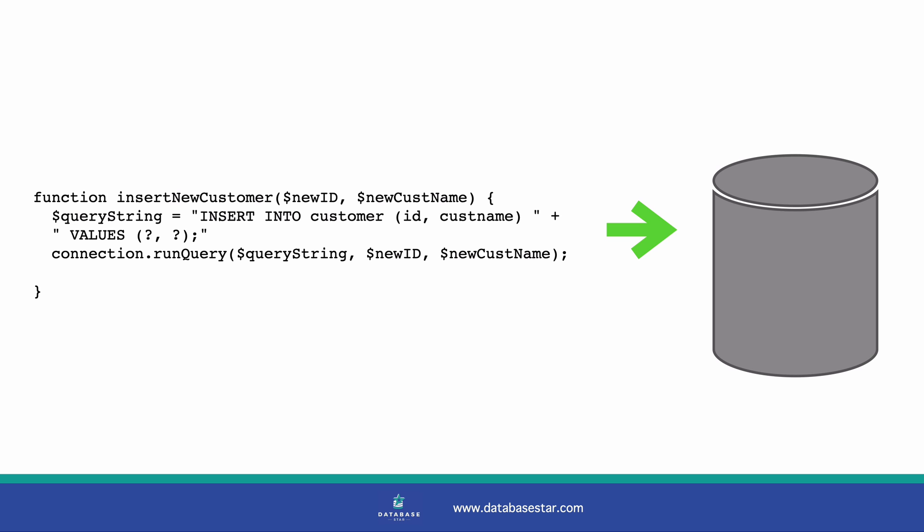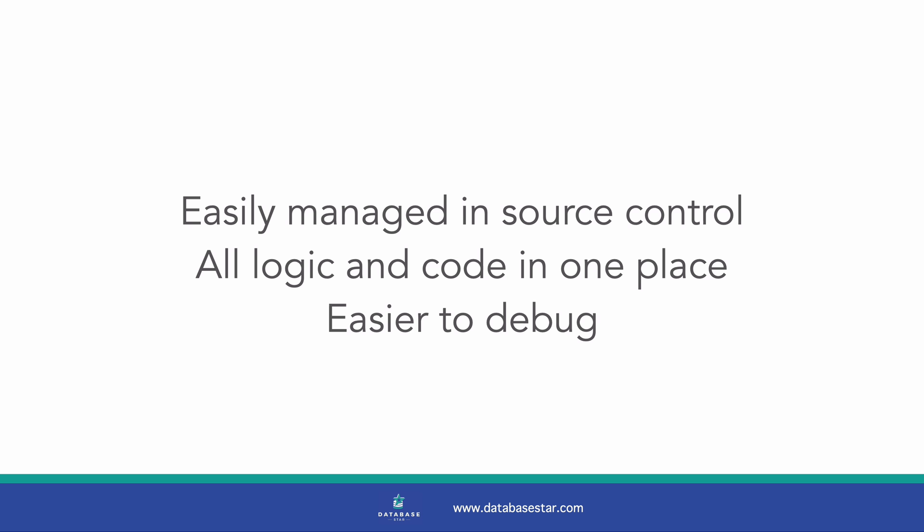If it's a select statement, you'll get the results back. This is simple to do and quite a common way of interacting with the database. It can work well for simple queries, and there are many advantages to this. Application code is easily managed in source control — you can easily make changes and commit them to a GitHub repository. You've got all your logic and code in one place, making it easy to maintain and debug.